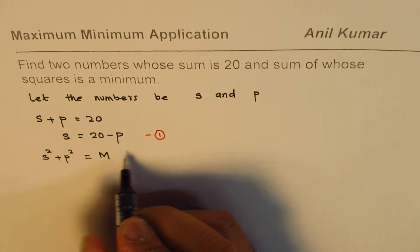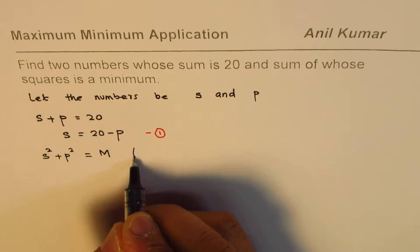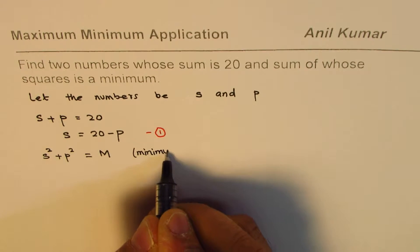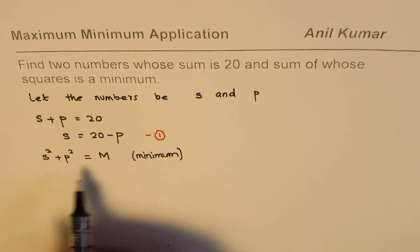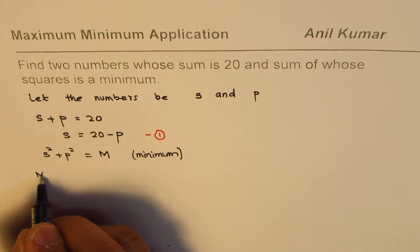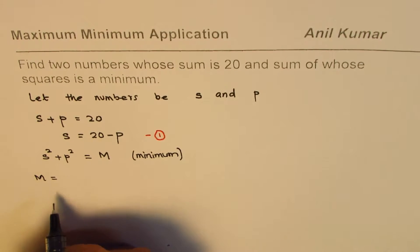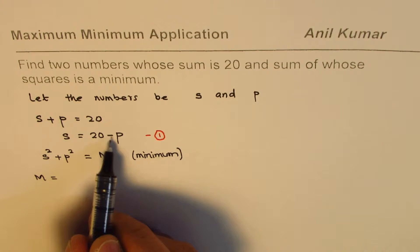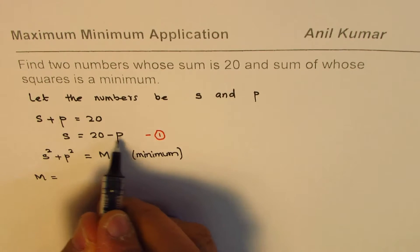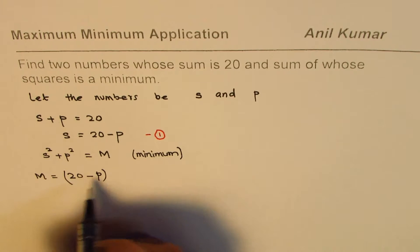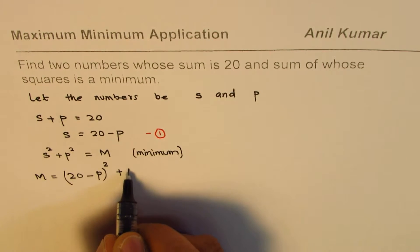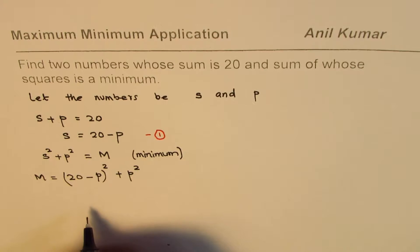Let's call this as M for minimum. We want to minimize this. Now, the minimum value M equals what? We'll try to figure it out. We know it is s² + p², so s could be written as 20 minus p. I replace s with 20 minus p, so we have (20 - p)² + p².